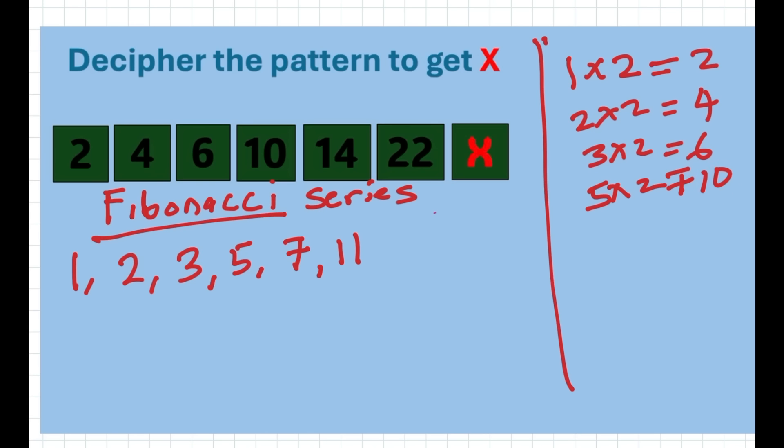Eleven multiplied by two is twenty-two. Now if you look at this prime number series, the next prime number after eleven is thirteen.